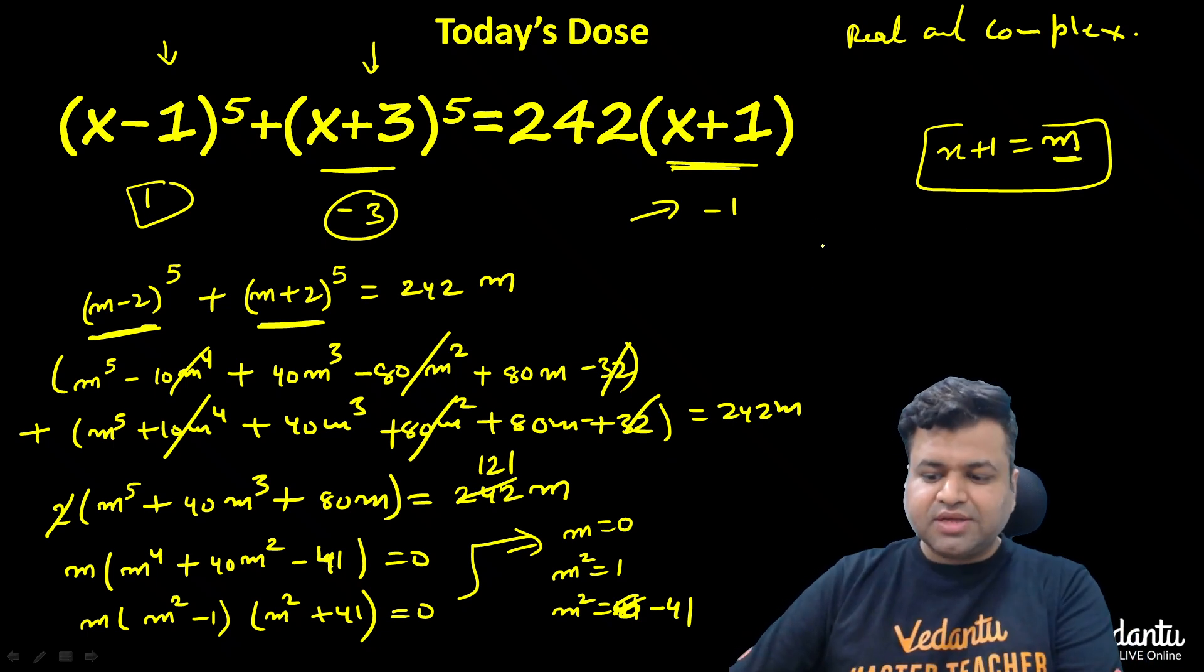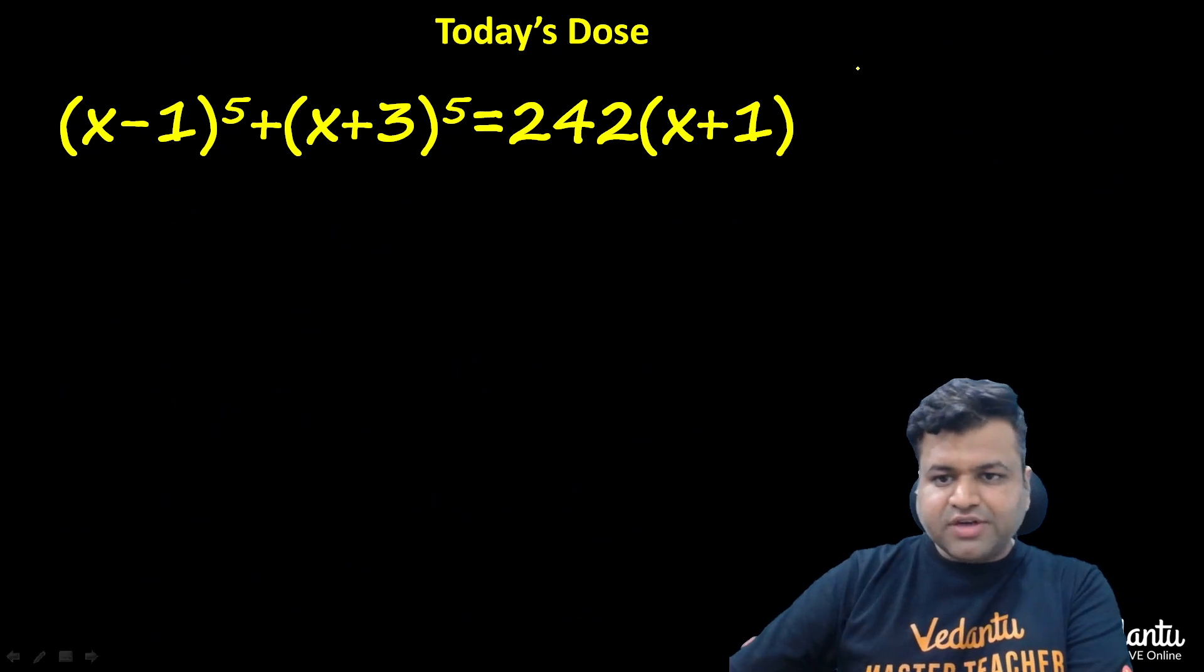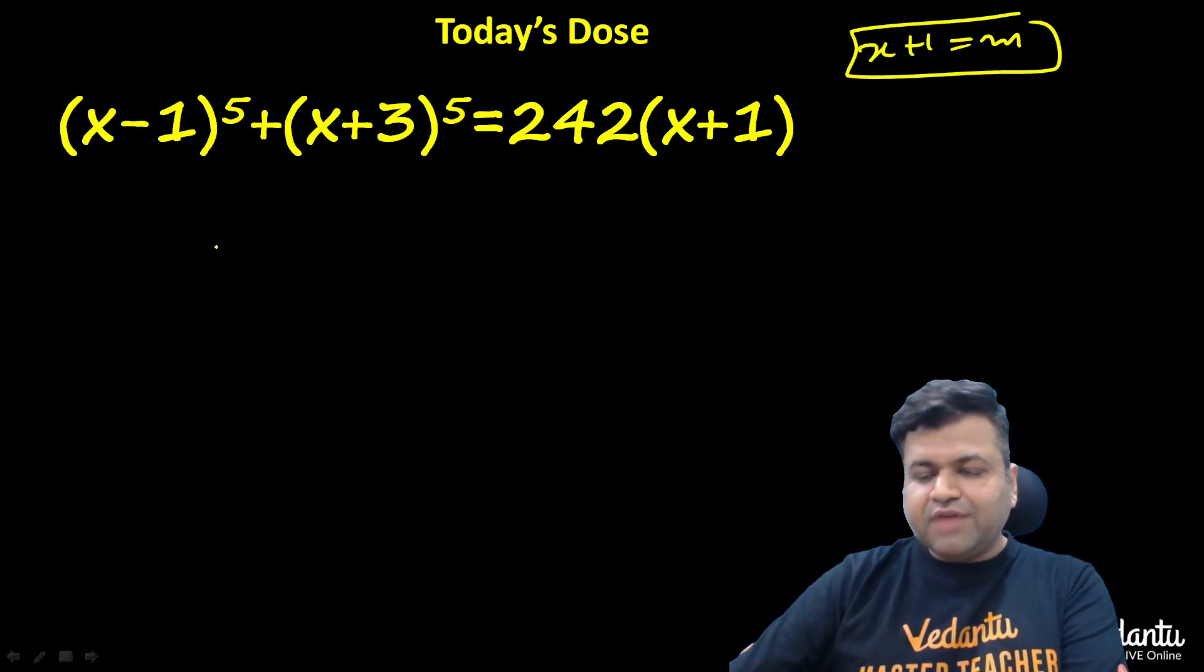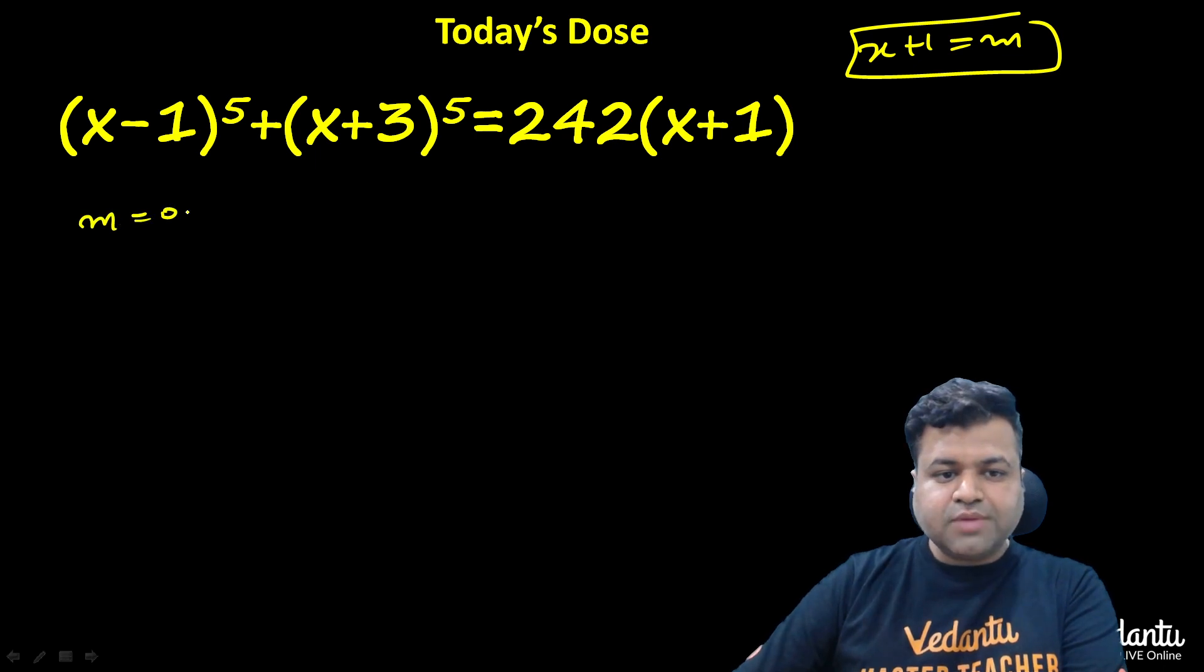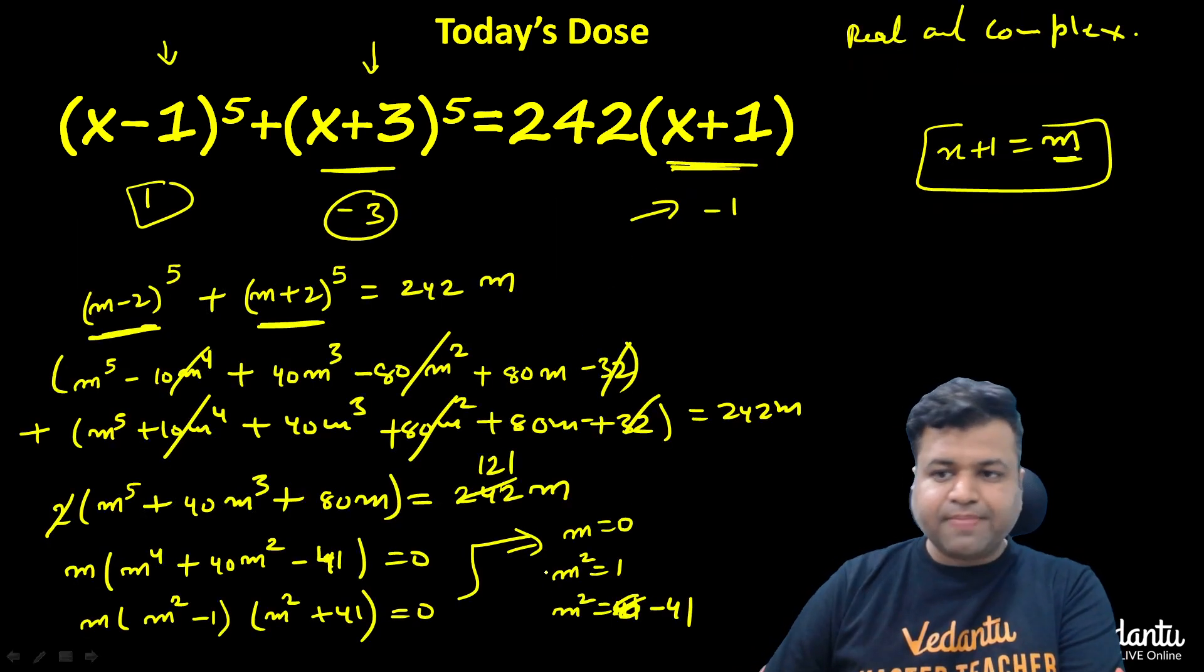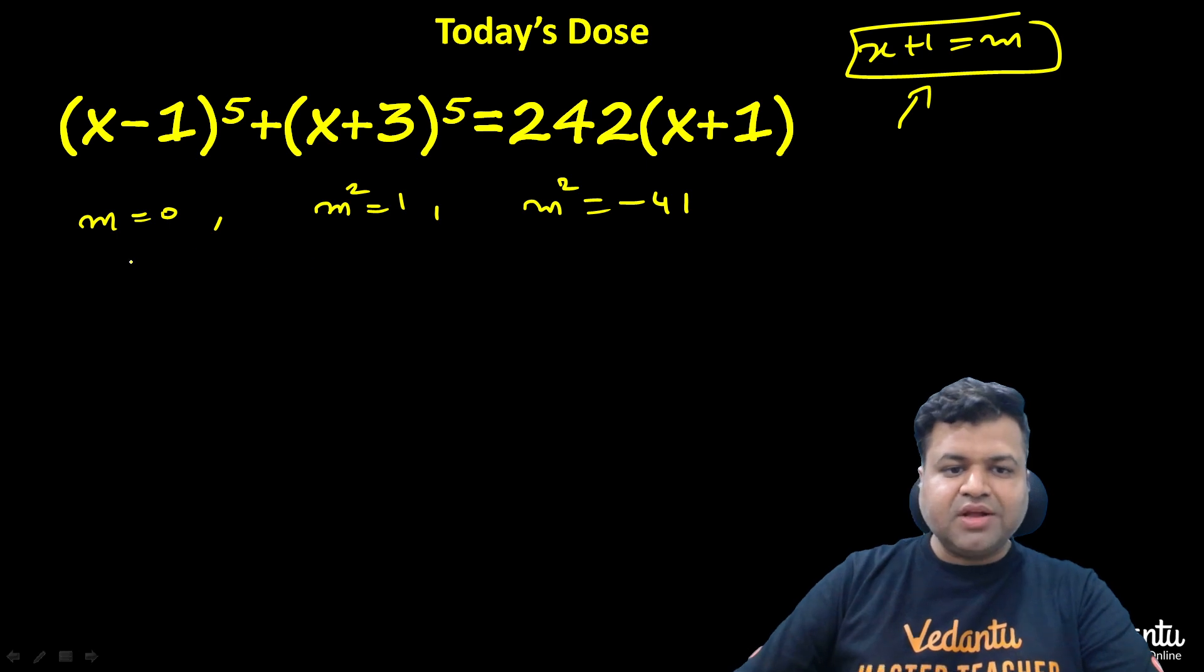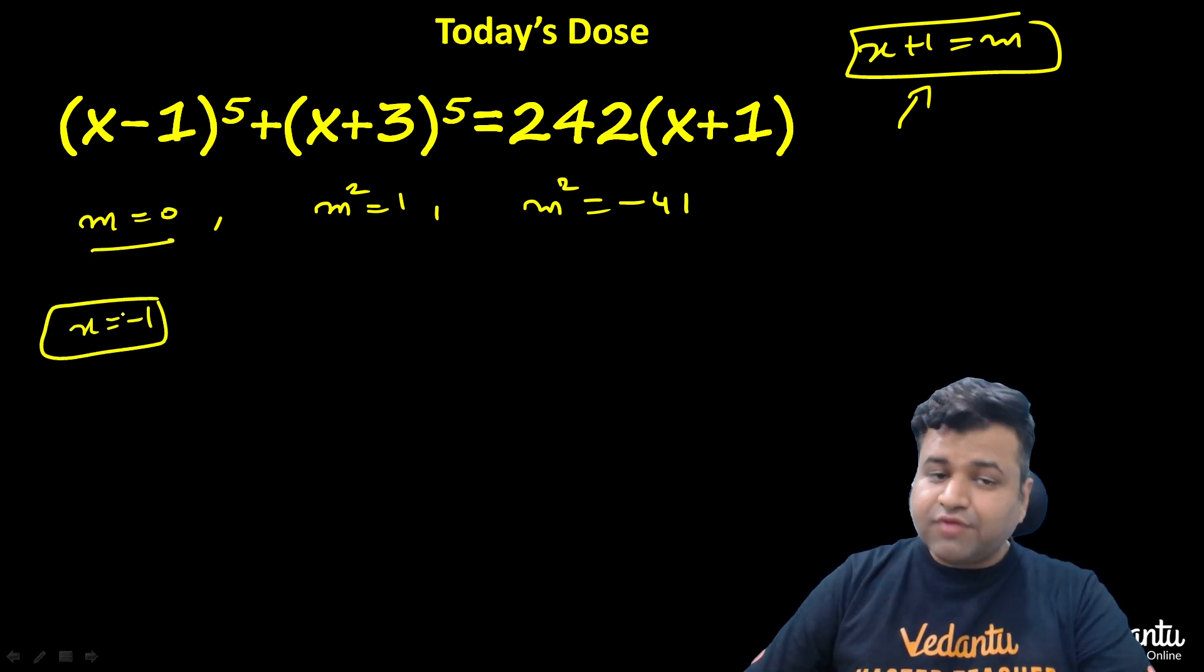Then we can talk about solutions. We have x+1 = m. If m is 0, then x should be equal to -1. This is one of the solutions. You can substitute -1: this will be -2^5, this will be 2^5, and this is 0.